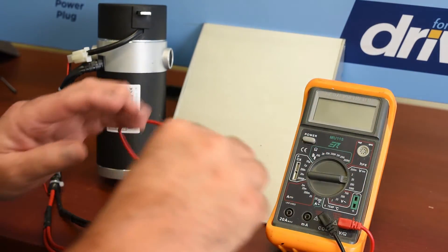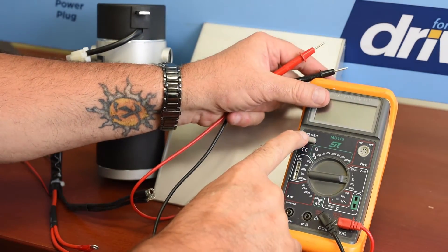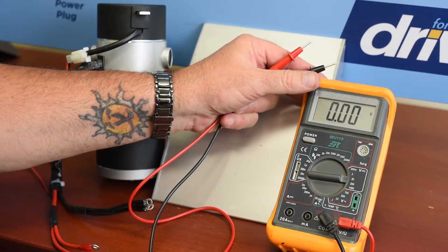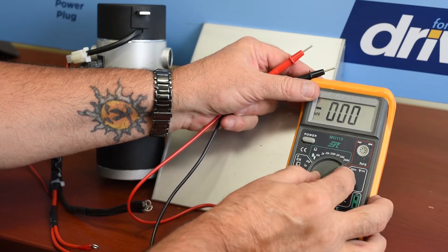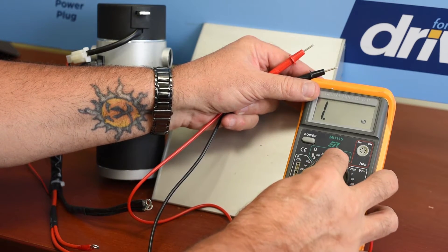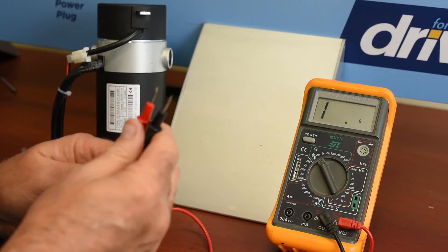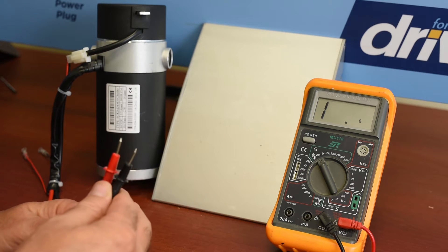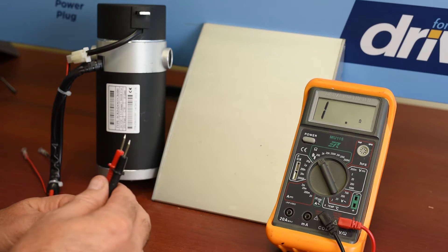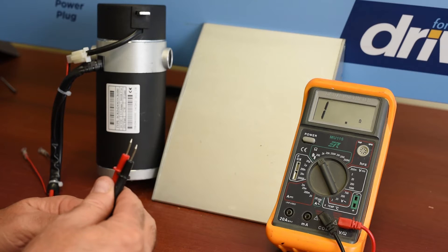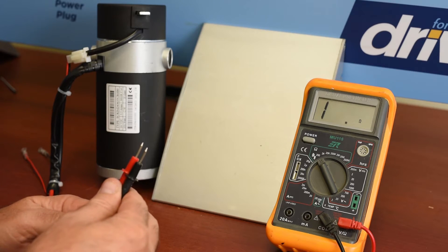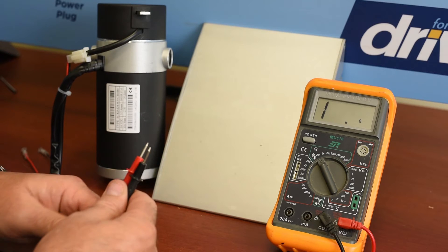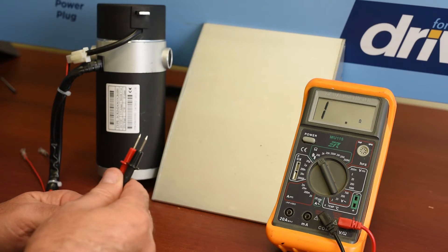The way we do that is we'll turn on our test meter, and we're going to put it to the 200 ohm scale, because we know that a good armature is going to read between 0.8 and 7 ohms of resistance, depending on the size of the motor and the winding wire diameter. The larger diameter wire in the motor that draws more power is going to have a lesser resistance.